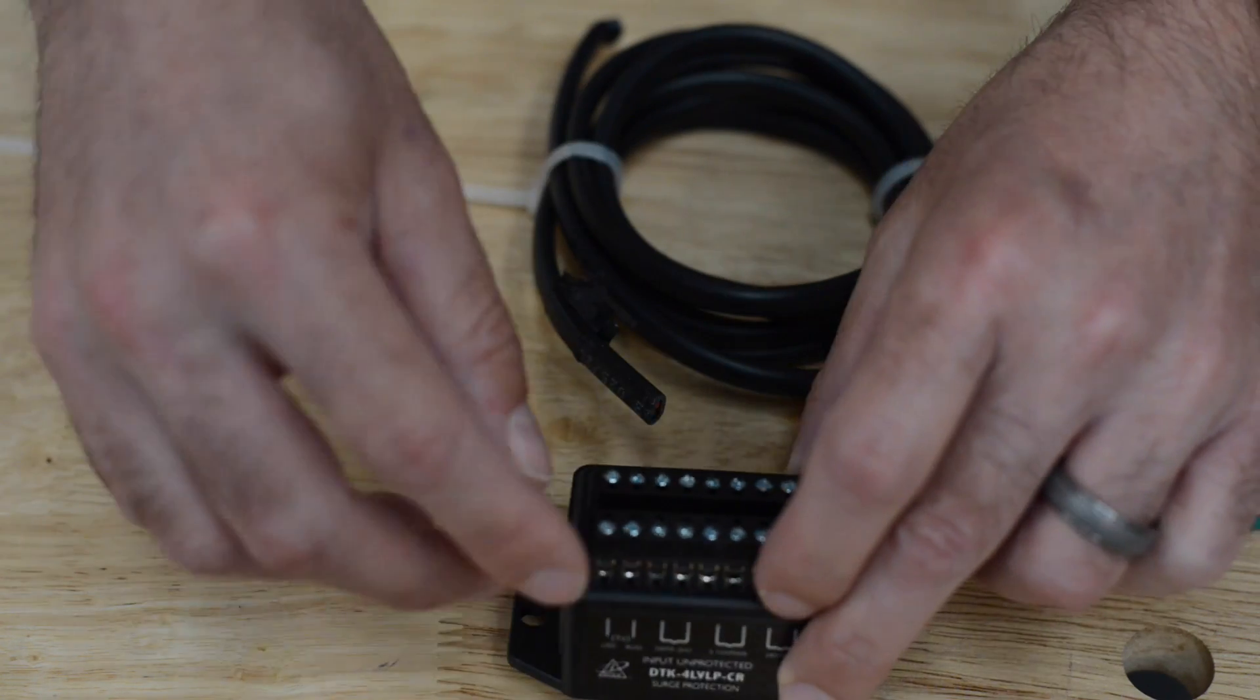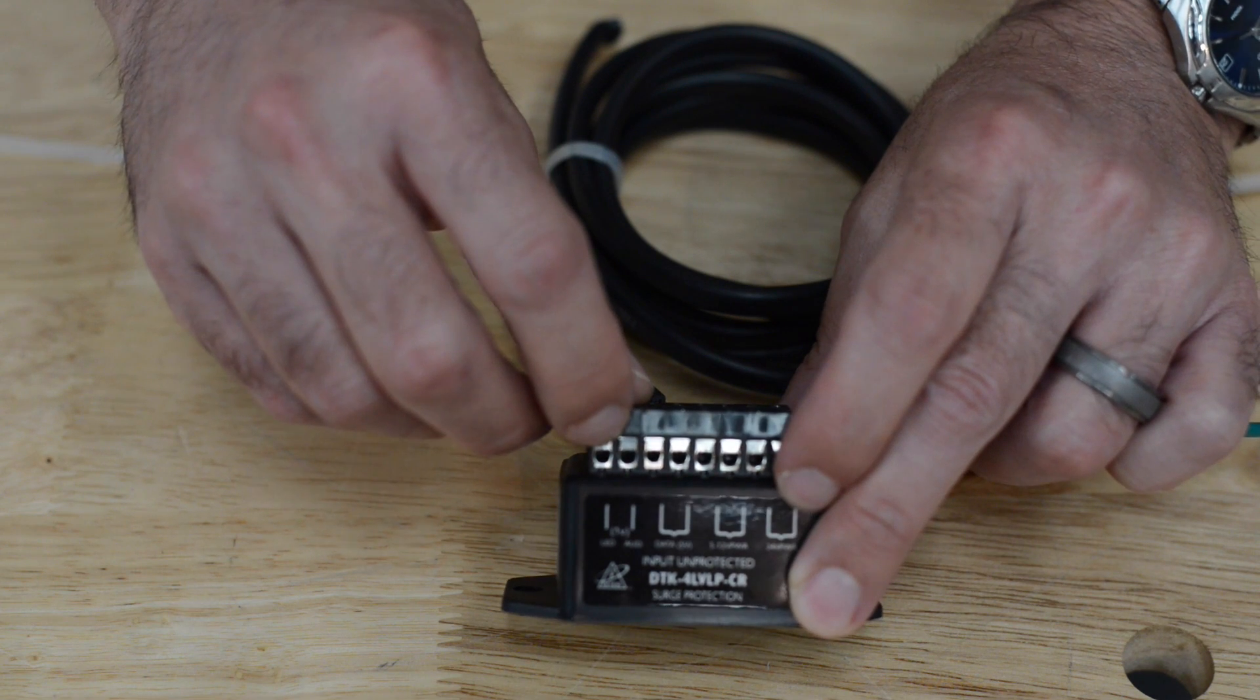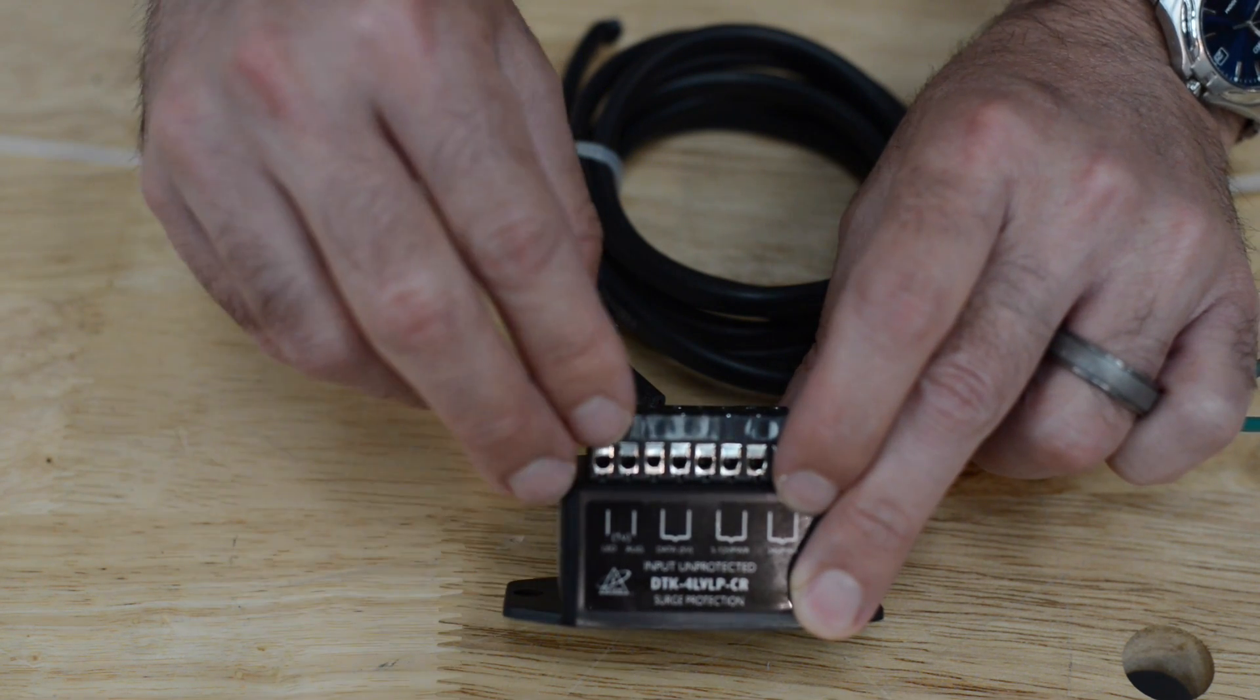So lines feeding into the gate opener would feed into these. You'll notice there are sets of terminals because most lines have two leads that are leading to your gate opener.